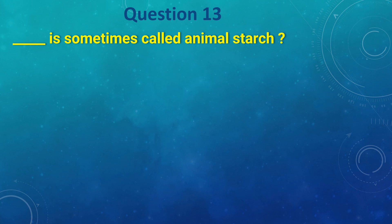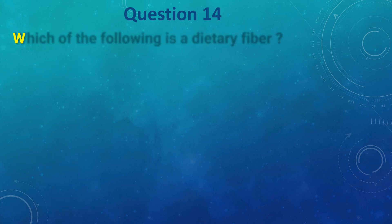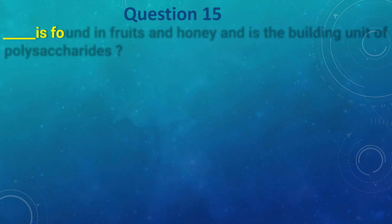Which of the following is dietary fiber: a) insulin, b) inulin, c) elastin, d) gelatin? The answer is b) inulin. _____ is found in fruit and honey and is a building unit of polysaccharides.